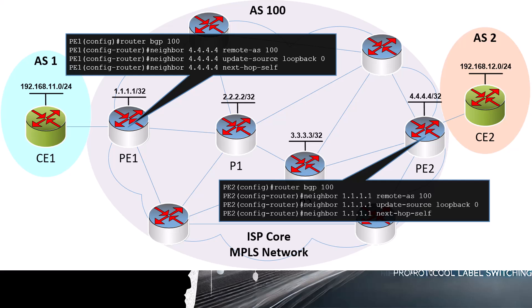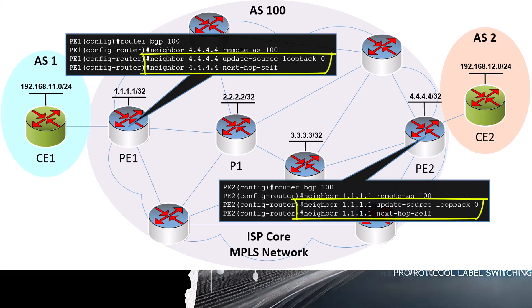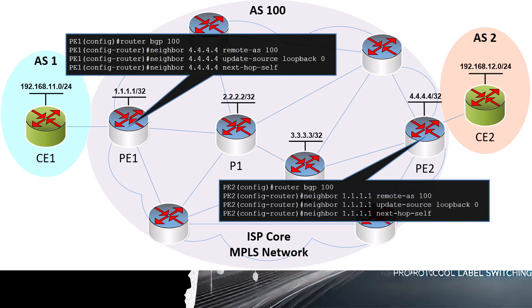Since we're using the loopbacks, we must also use the next-hop-self command and the update-source command. The P routers remain unchanged — they don't need to know about BGP because they won't be participating in it. They don't need to know the customer networks, but their OSPF configurations allow them to convey iBGP peering messages between the PE routers, allowing them to become iBGP peers and exchange routes.